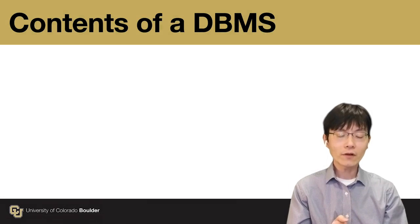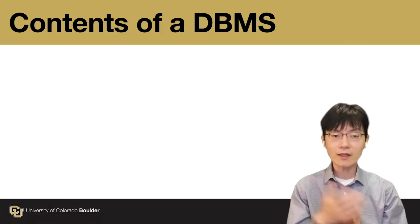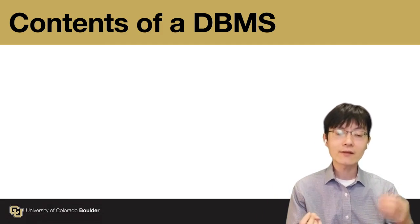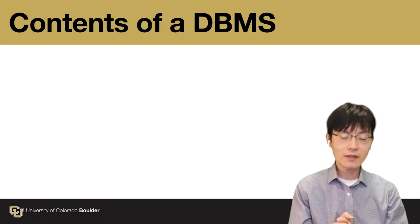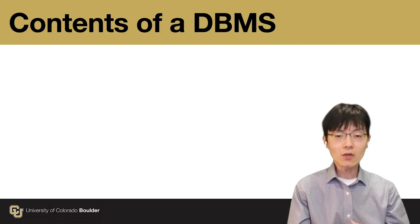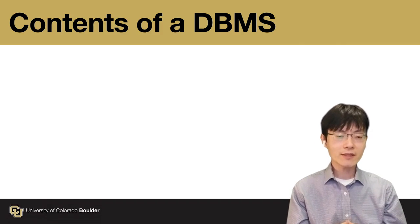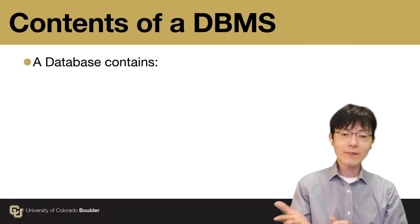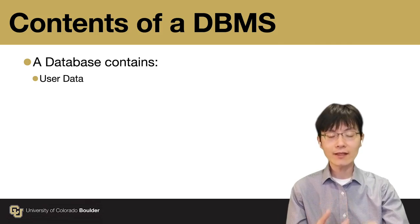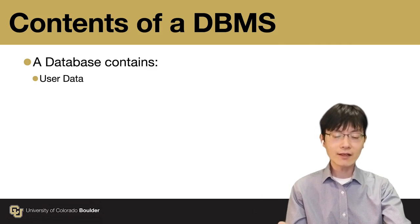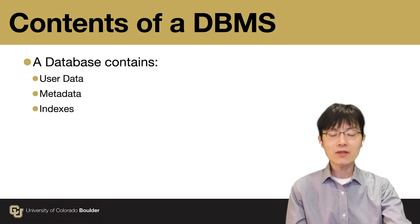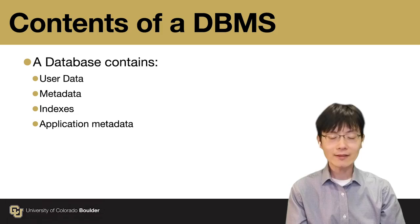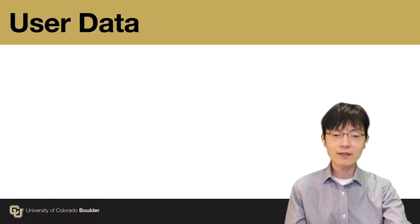Now we have already discussed the database and database management systems, and we learned the advantages and disadvantages of database management systems. Now let's look into what a database management system actually contains. A database contains the following data: user data, metadata, indexes, and application metadata. We are going to go into each of them in detail.